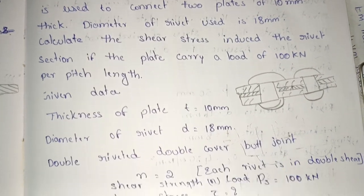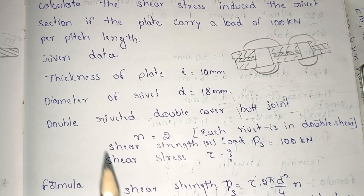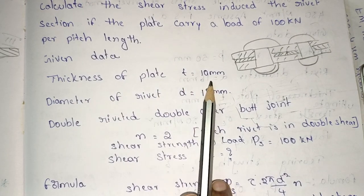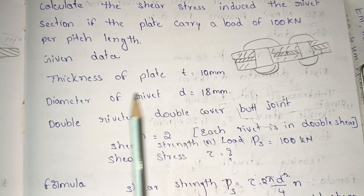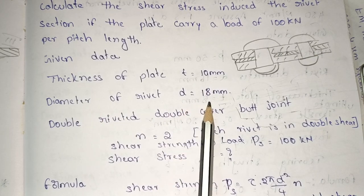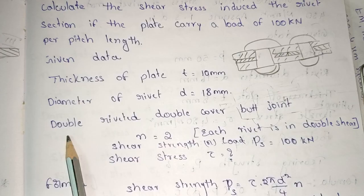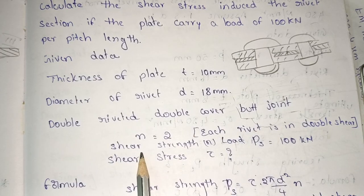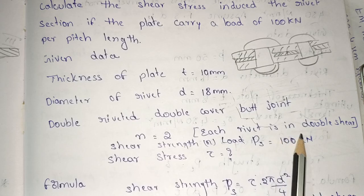Given data: thickness of the plate t equals 10 mm, diameter of the rivet d equals 18 mm. Double riveted double cover butt joint means n equals 2. Each rivet is in double shear.